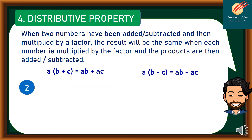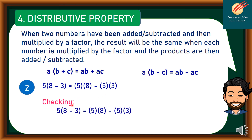Another example: 5 times (8 minus 3) is the same as 5 times 8 minus 5 times 3. Checking: 5 times the difference of 8 and 3 equals 5 times 8 minus 5 times 3, so 5 times 5 equals 40 minus 15. Truly, 25 equals 25.